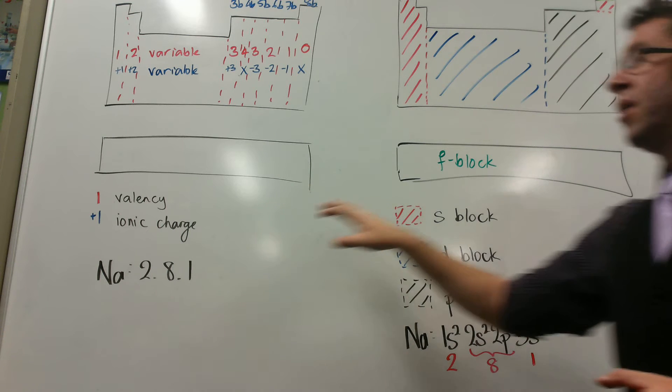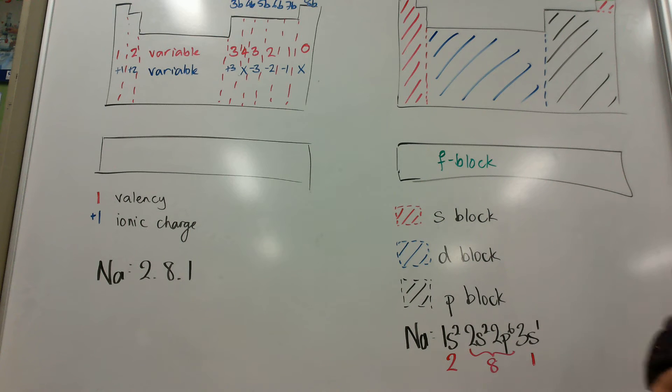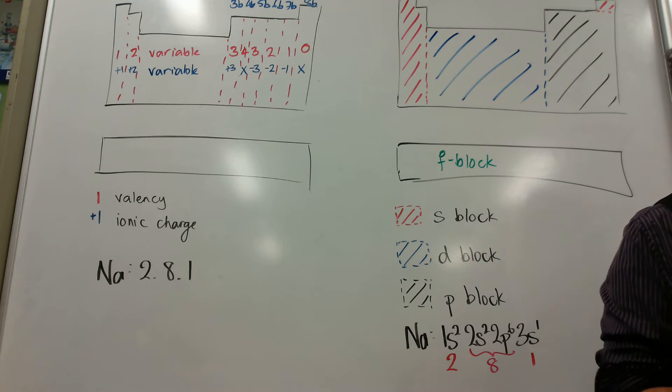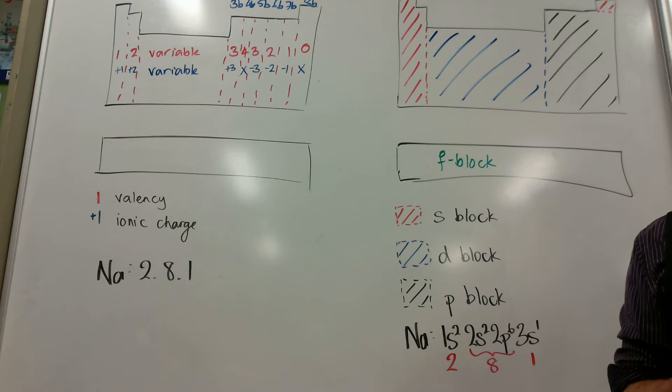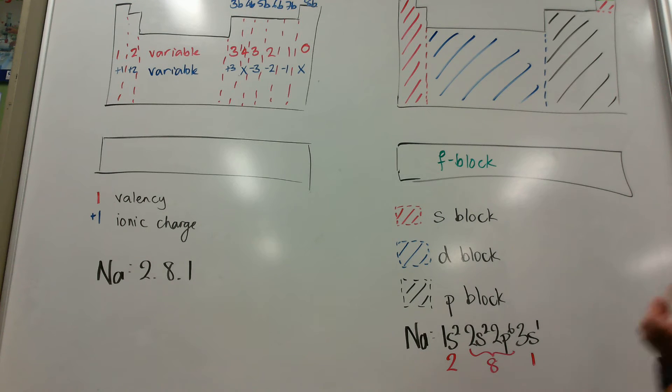And then we're going to see how we are going to look at it this year, so that we can understand those variable oxidation states, all those iron charges that are confusing, and then we're going to look at one example in particular, which is iron.